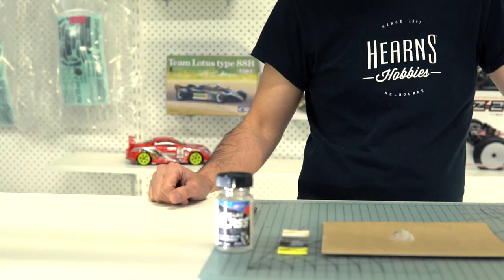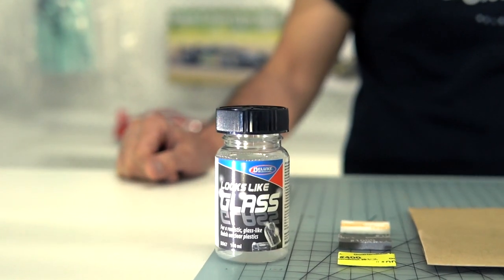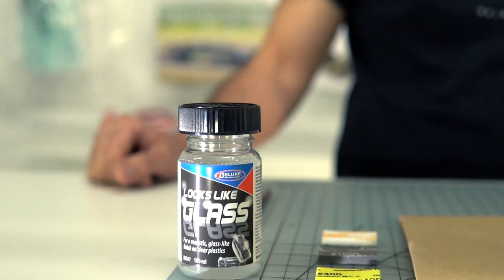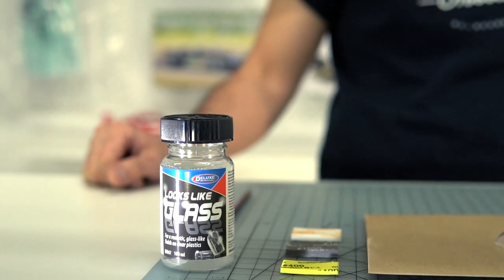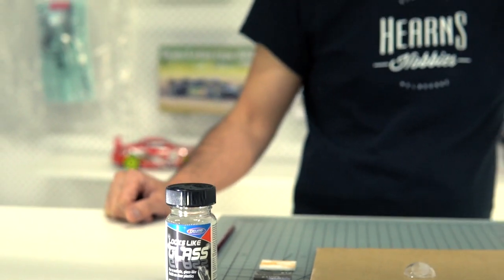So Looks Like Glass is a water-based clear and it's designed to work like a lot of people used to use floor polish for dipping their clear parts to make them look more crisp.